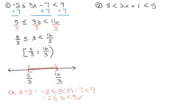Now the second problem: 8 is less than 2X plus 1 is less than 5. Check if it makes sense — 8 is less than 5? That doesn't make sense, so there's no solution and you're done. Don't even start solving. There would be no point subtracting 1 from all three parts and dividing by 2, because there is no solution. You could try random values for X and nothing will ever work.